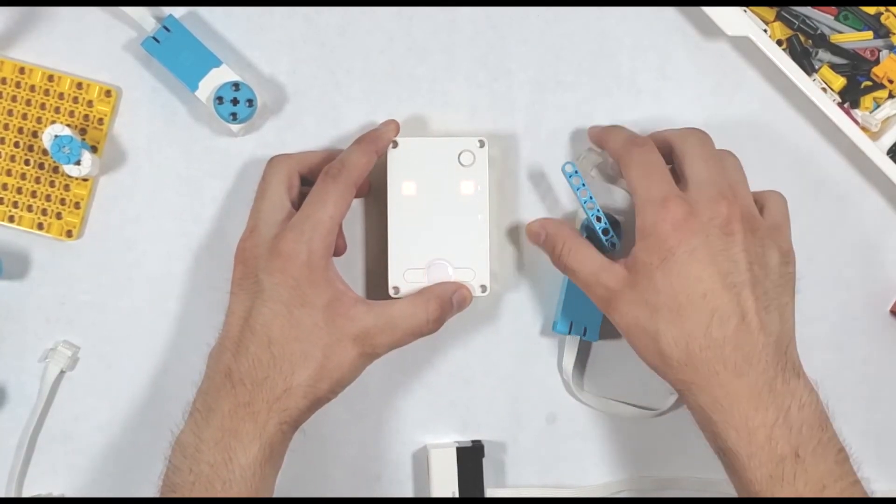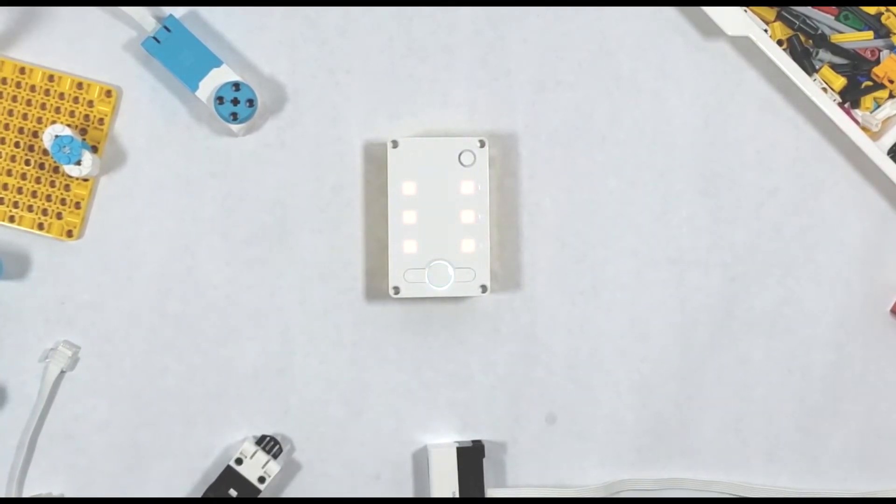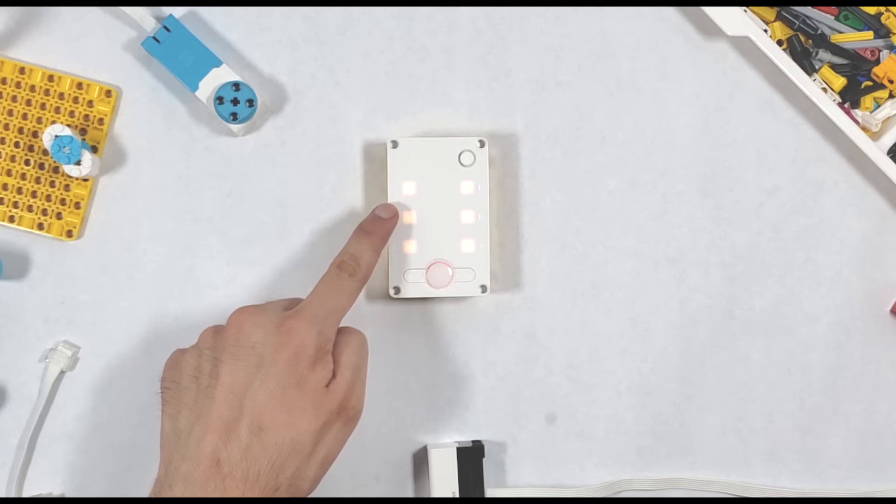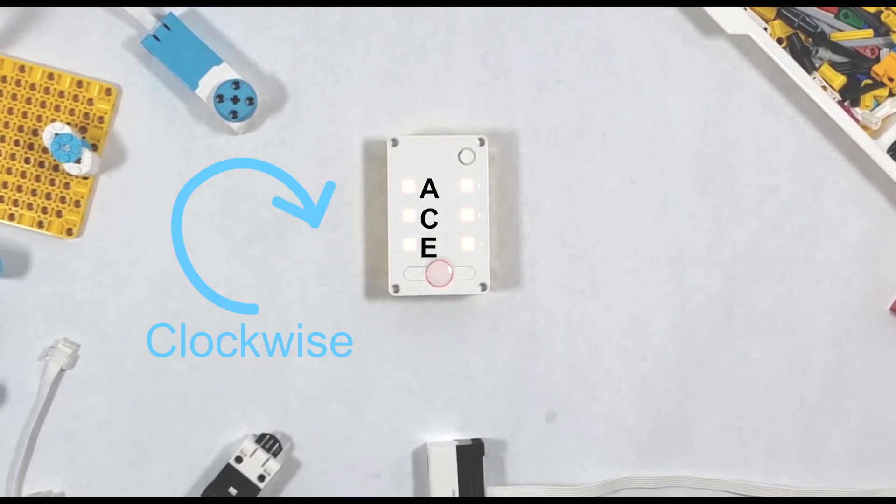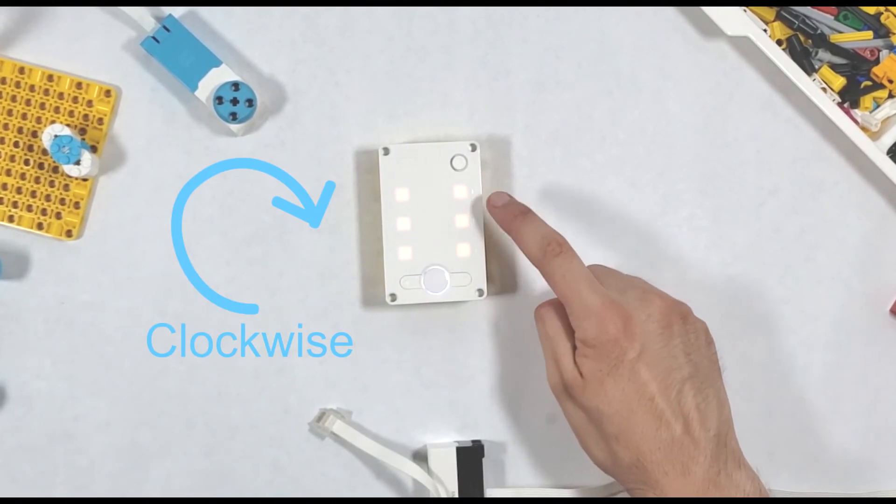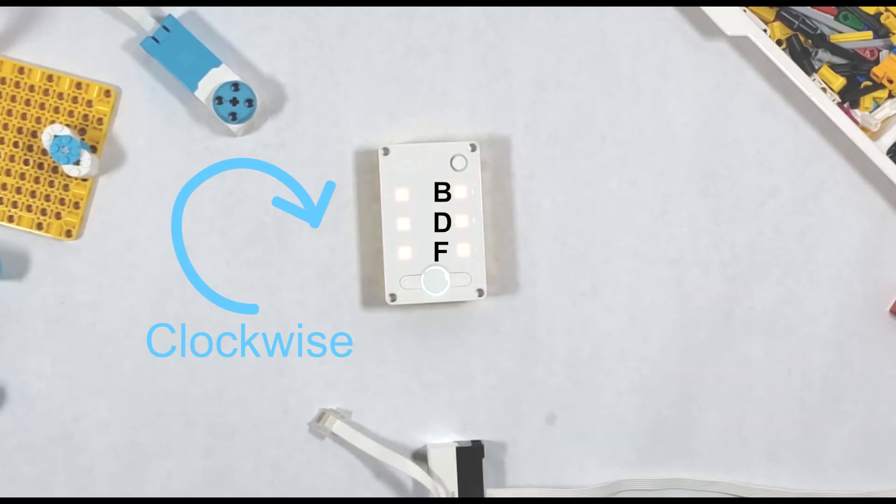You can run your motors in different directions based on which side of the hub they're attached to. The left side ports A, C, and E will run motors clockwise, while the right side ports B, D, and F will run motors counterclockwise.